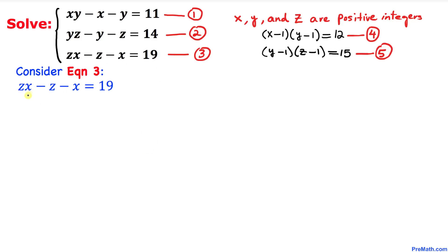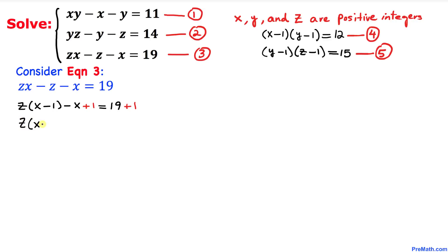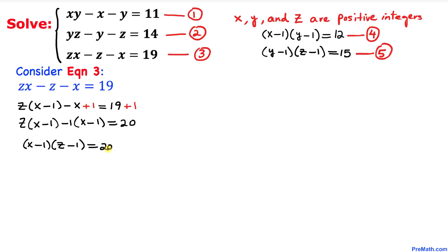Now consider equation three: zx minus z minus x equals 19. We factor z from the first two terms to get z times (x minus 1) minus x equals 19. Adding one to both sides and factoring, we get (x minus 1)(z minus 1) equals 20. I'll call this equation six.